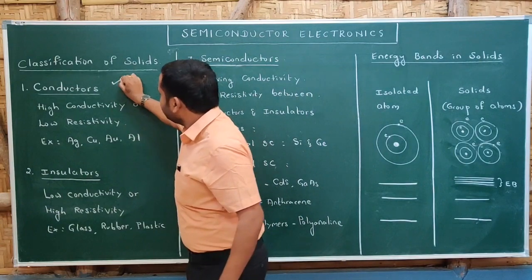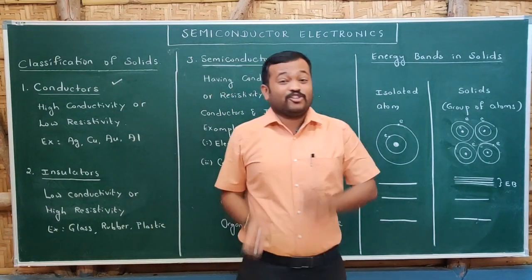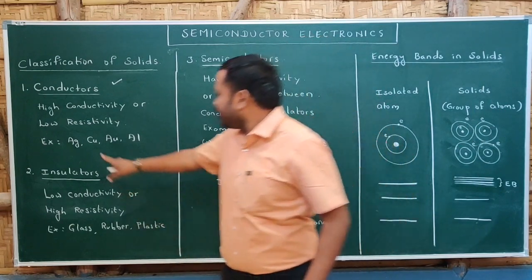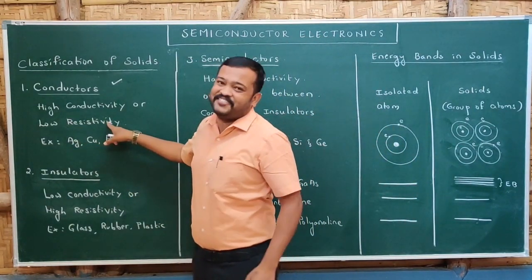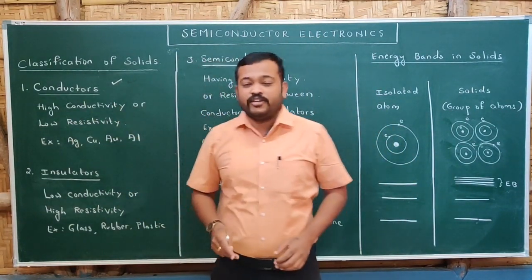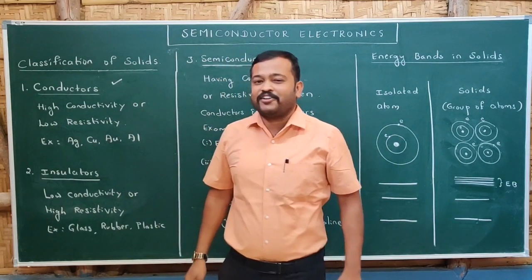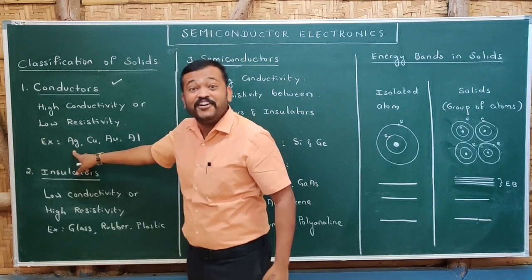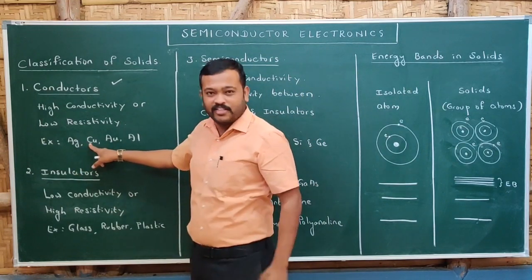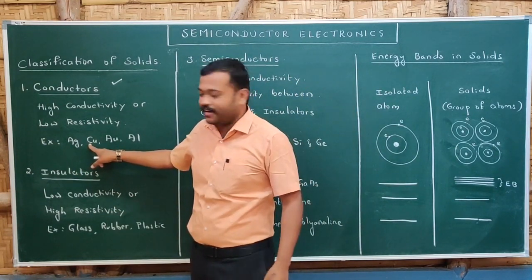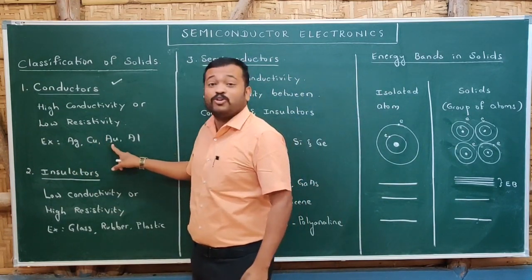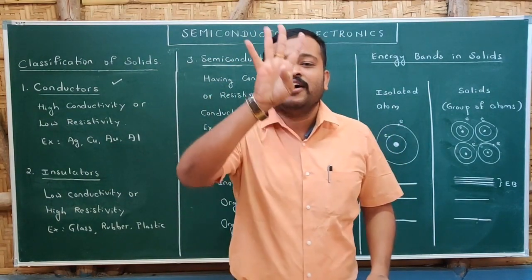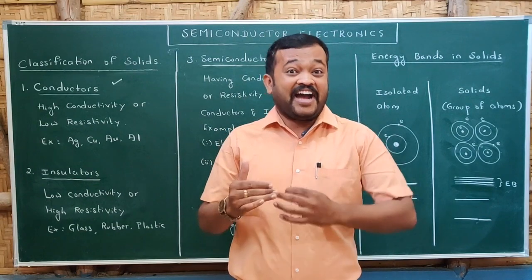Let us begin with conductors. Conductors are the solids which have high conductivity, or in other words, low resistivity. The best conductor of electricity is silver. The second is copper — that is why we use copper wires. Then it is gold and then aluminum. These are the first four elements which have high conductivity.